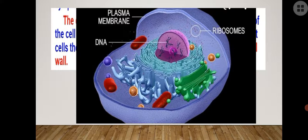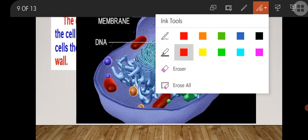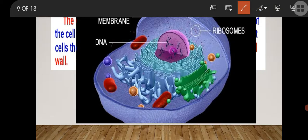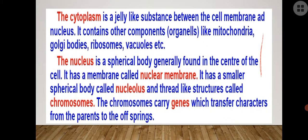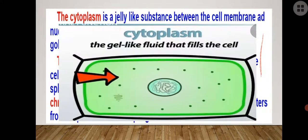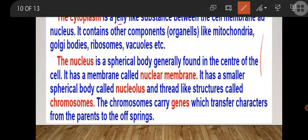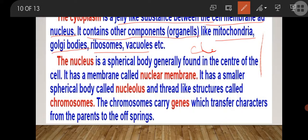You can see in this image: the red line I am drawing here is the plasma membrane, the outer covering of the cell. Cytoplasm is the jelly-like substance between the cell membrane and nucleus, and it contains different cell organelles like mitochondria, Golgi bodies, ribosomes, vacuoles, and others where different chemical reactions occur.